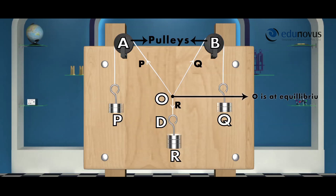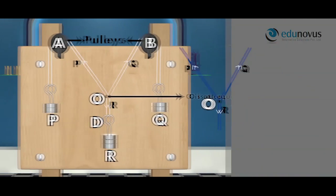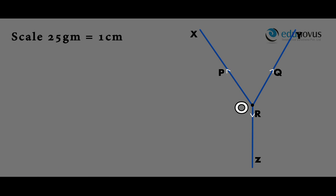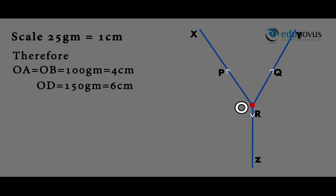Here P, Q and R are three coplanar forces on X, Y and Z acting at point O. Let us consider a scale of 25 grams equal to 1 centimeter. Therefore, OA is equal to OB is equal to 100 grams, which is 4 centimeters. OD is equal to 150 grams, which is 6 centimeters. Draw the arcs from point O on all three forces P, Q and R with their corresponding values. Mark them as A, B and D.